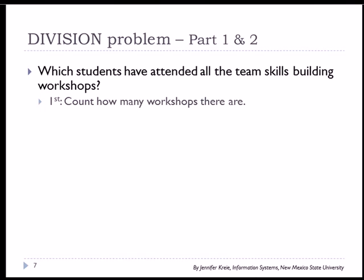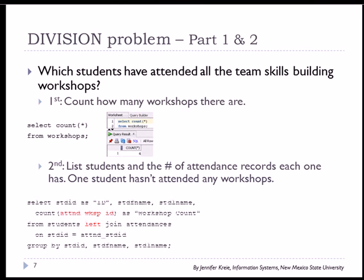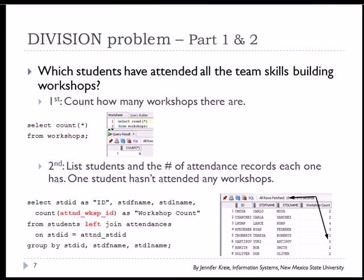So what do we need to do to answer the question, which students have attended all the team skills building workshops? We count how many workshops there are. We then get a list of students and the number of attendance records for each student. And we're using our left join. So I see that we have, for example, that Yuri Antipov has not attended. But I'm also seeing the count for the ones that have attended. And you can see in advance that Lance Comp has attended four and we have four workshops, so he should show up in our output.